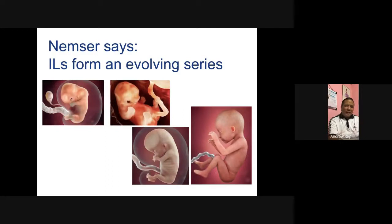You can think of interlanguages as forming an evolving series. At the start, it's just a bunch of cells. Then later on, the head is formed, you have things that look like arms and feet, but they're not very much like feet. But then they develop until finally it looks like a baby. That's the idea of interlanguage.